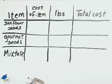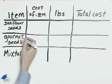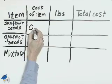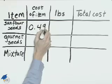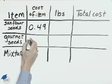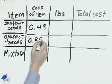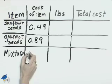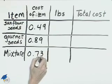Let's fill in this table with the information that we have. We know that sunflower seeds are 49 cents per pound and the gourmet seeds are 89 cents per pound. The mixture is 73 cents per pound.